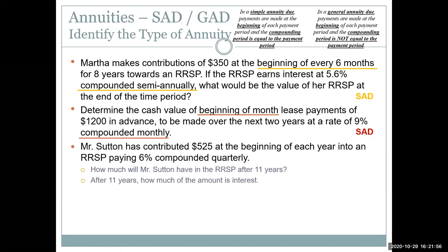Mr. Sutton contributes $525 at the beginning of each year into an RRSP paying 6% compounded quarterly. We want to know how much he'll have after 11 years and how much of that amount is interest earned. Payments are regular so it's an annuity; payments are at the beginning so it's an annuity due. Yearly payments with quarterly compounding — those two periods don't match — so it's a general annuity due.